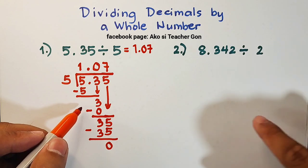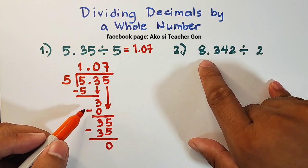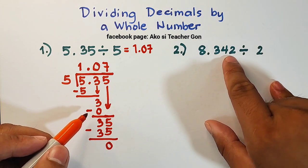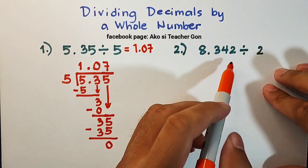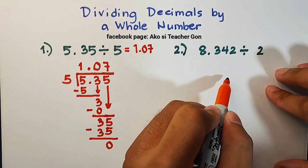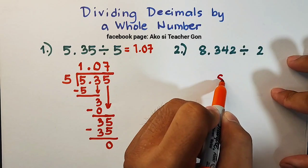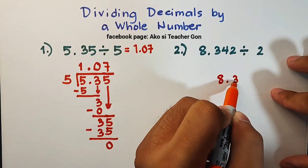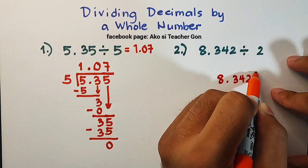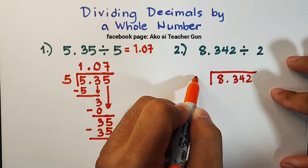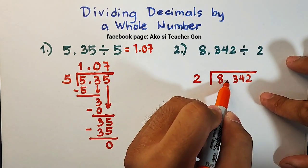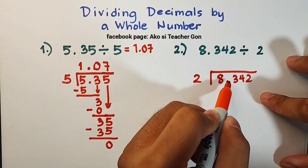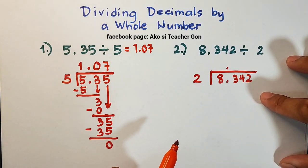So let's continue with item number 2. For number 2, we are given 8.342 divided by 2. So this is your dividend, and this is your quotient. So we will place it here, 8.342, and your divisor outside this one. So again, since we are dividing by a whole number, we can automatically bring up our decimal point.